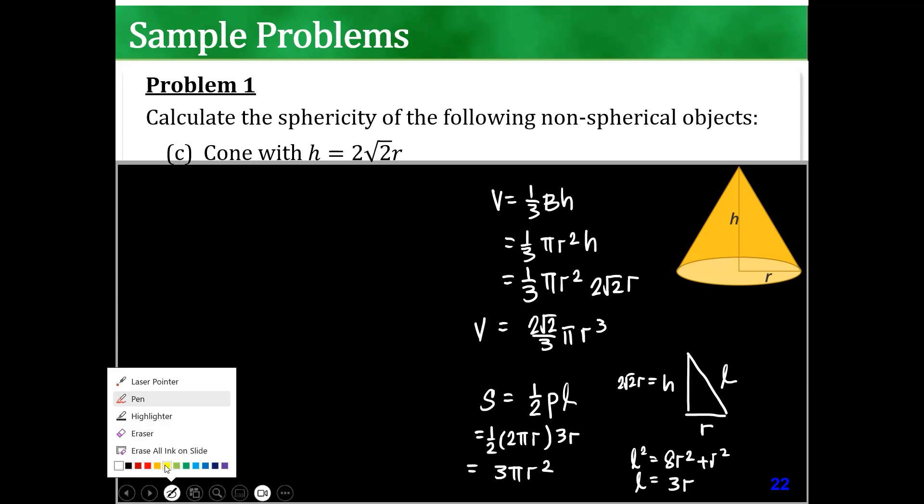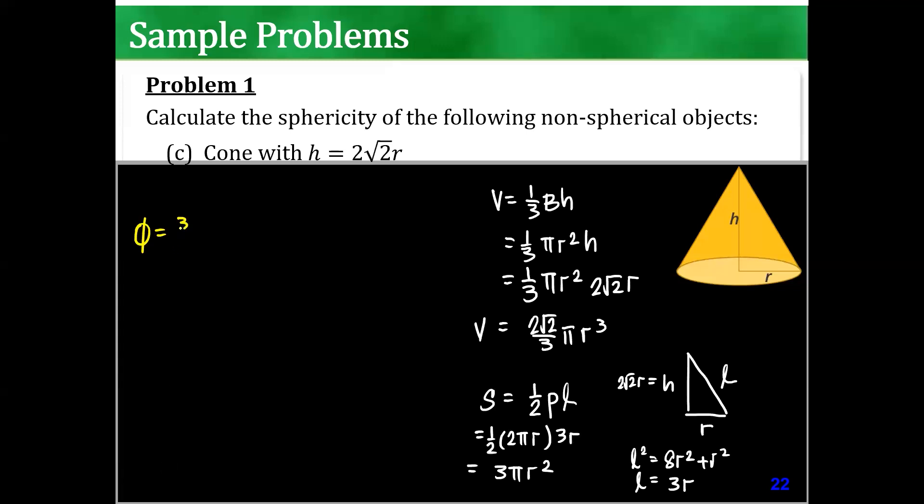So one half perimeter of the base is 2 pi r times 3 r. Therefore, this is 3 pi r squared. So let's go to the formula. Sphericity is equal to the cube root of 36 pi v squared all over s. 36 pi v squared, so 2 becomes 4 times 2 is 8 over 9, pi squared r to the 6 is pi r squared plus one half pl, because the circle at the bottom. Sorry for that. So pi r squared plus that. So 4 pi r squared because 3 pi r squared was the previous one.